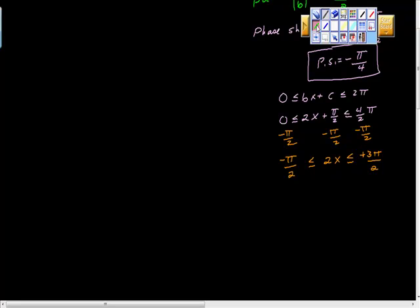Lastly, I'm going to divide everything by 2, aren't I? Because I just want x here by itself. So I'm going to divide here by 2. And right, to divide by 2 is to multiply by 1 half. Isn't that right? That is good. Is that alright? So we get negative pi fourths is less than or equal to x, and x is less than or equal to 3 pi fourths.